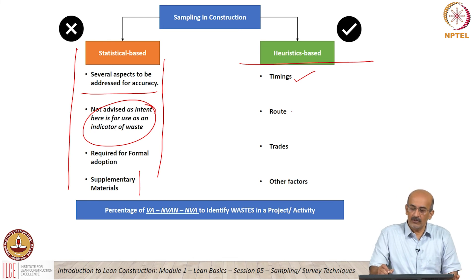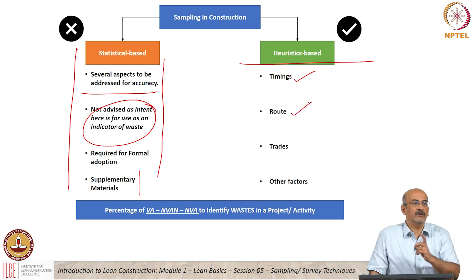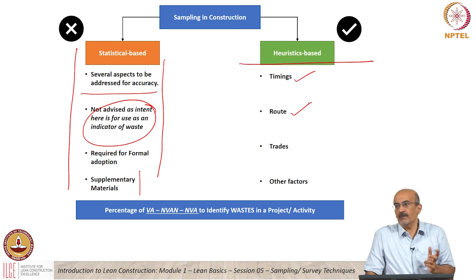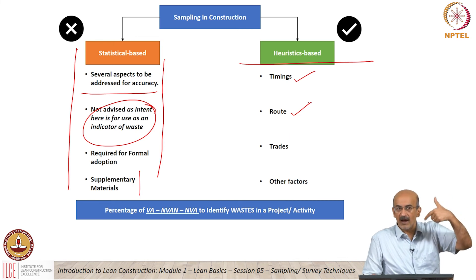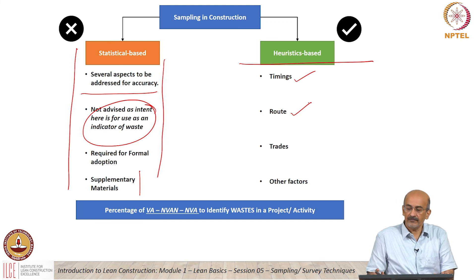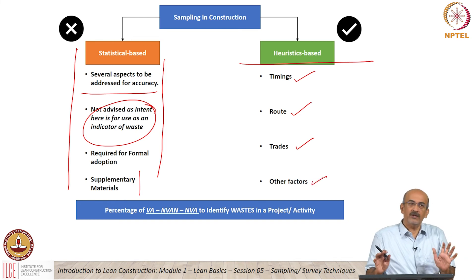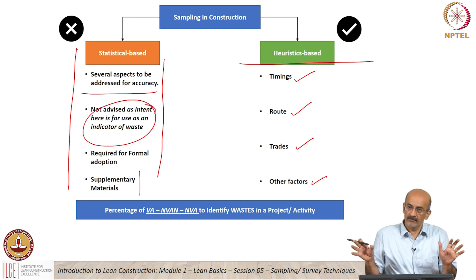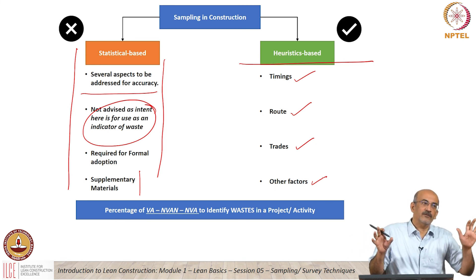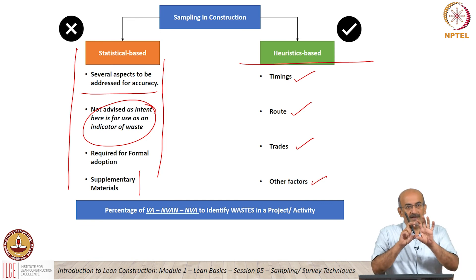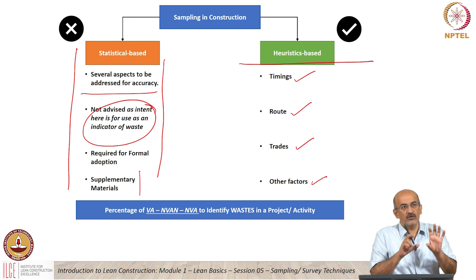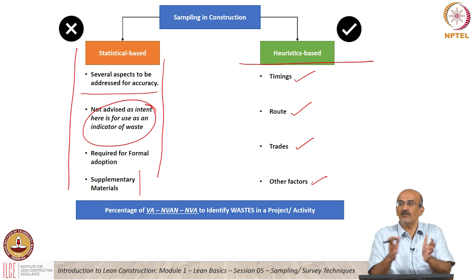You also have to look at the routes. I cannot just sample the area close to the planning office. I have to know where the work is going on and visit all areas. If I am doing a tour-based sample, I have to visit all the trades. You also have to consider that sometimes you have multiple observers, and each observer should not categorize work in their own way. There should be a certain understanding and standard by which you are doing the work sampling — not everyone doing it their own way and mixing the results together.